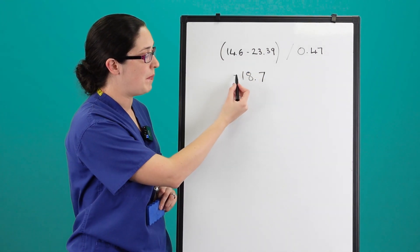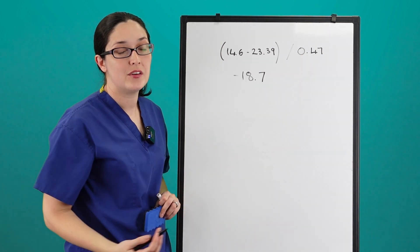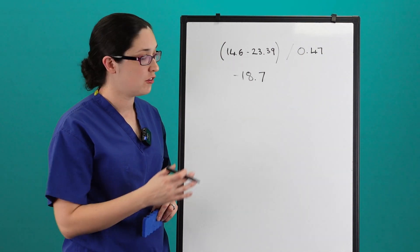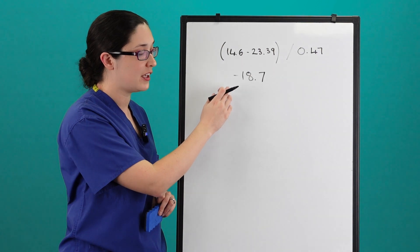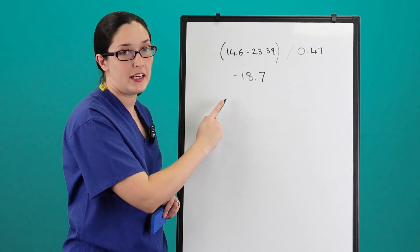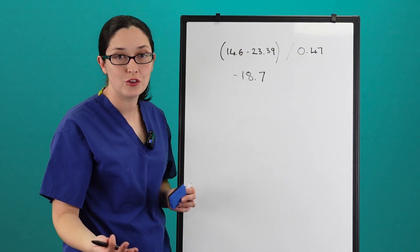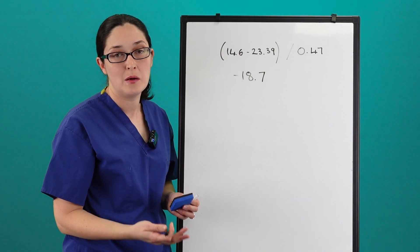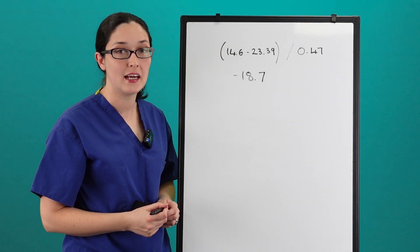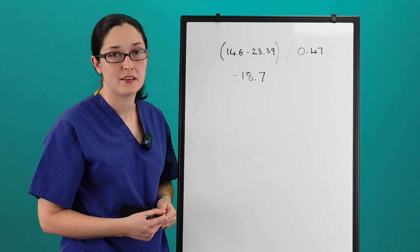In this particular example you get an answer of minus 18.7, meaning 18.7 days before she is due to give birth. Remember this does not give you the gestational age — it gives you the days before the due date. You can work out the gestational age by deducting it from 65 days, which is the generally accepted length of pregnancy in cats.